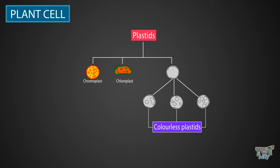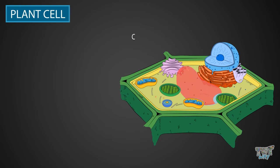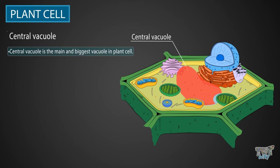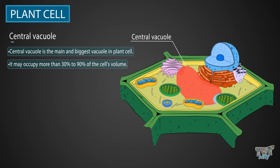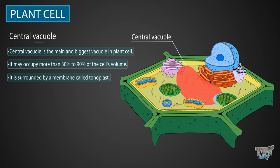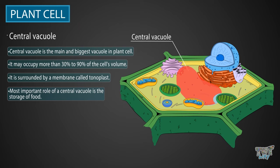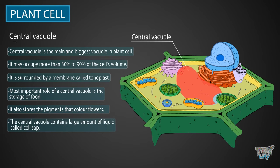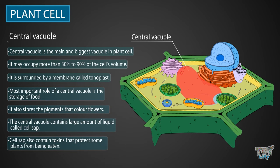Next, we have the central vacuole. A plant cell may have many vacuoles, but the main and biggest vacuole is known as the central vacuole. It may occupy more than 30 to 90% of the cell's volume. It is surrounded by a membrane called tonoplast. The most important role of the central vacuole is the storage of food. It also stores the pigments that color flowers. The central vacuole contains large amounts of a liquid called cell sap, which may also contain toxins that protect some plants from being eaten.